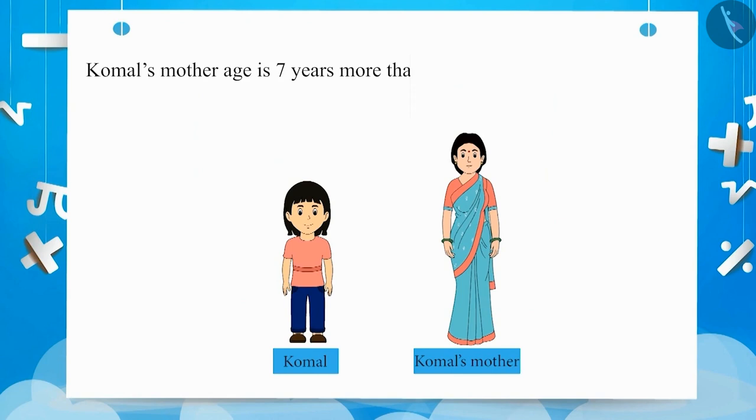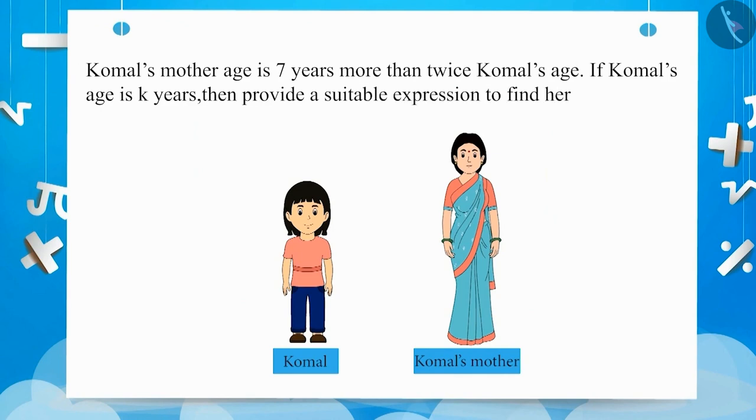Komal's mother's age is 7 more than twice her age. If Komal's age is k years, then provide a suitable expression to calculate her mother's age.